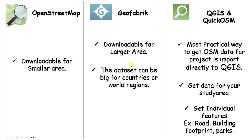For the QuickOSM plugin, this is the most practical way to get OSM data for any project. You can directly input it into QGIS, and you can get data specifically for your study area — you don't have to download a larger area and then clip it down. It saves time. Also, you can download individual features: some users may require only roads, some may require building footprints, and some might require parks.